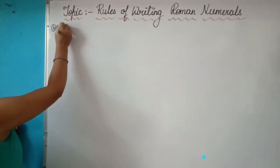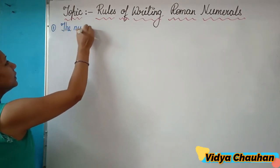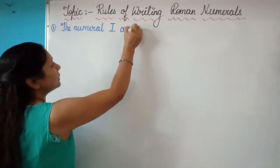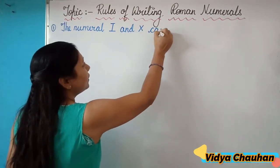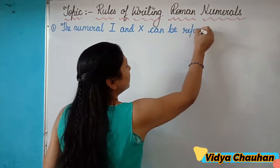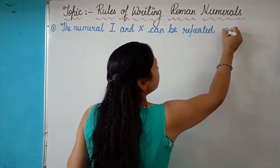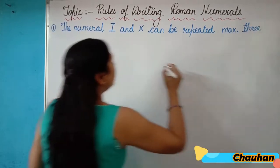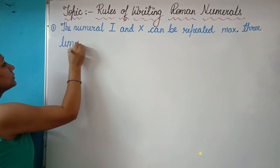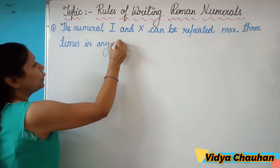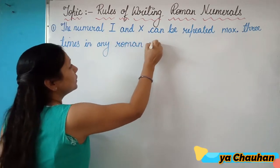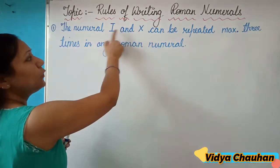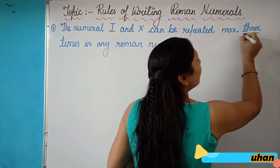The first rule is: the numerals I and X can be repeated a maximum of three times in any Roman numeral. I repeat — the numerals I and X are the only two Roman symbols which can be repeated a maximum of three times while writing any Roman numeral.